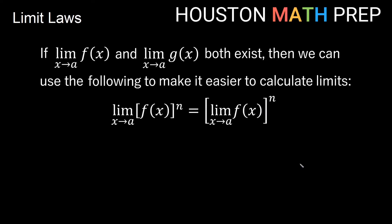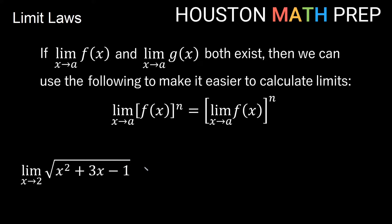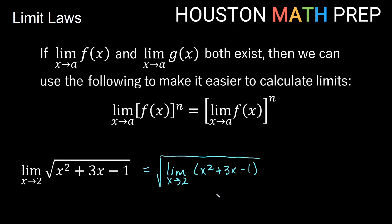We can do a similar thing with powers. Remember that a square root is the one-half power, and even-indexed roots of negative numbers are undefined, so be careful. But if you have a power of a function and want to take the limit, you can take the limit first and then apply the power. For the limit as x approaches 2 of the square root of x squared plus 3x minus 1, we already know that inner limit is 9. So we get the square root of 9, which is 3.